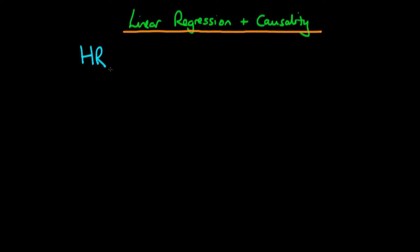We're going to assume that the potential resting heart rate of an individual I who chooses to exercise an amount E is linear in the amount of exercise they actually choose. Specifically, we assume the potential level of heart rate for individual I exercising amount E equals alpha plus beta times E plus epsilon_I, where epsilon_I is an error term capturing all other factors affecting an individual's potential resting heart rate.